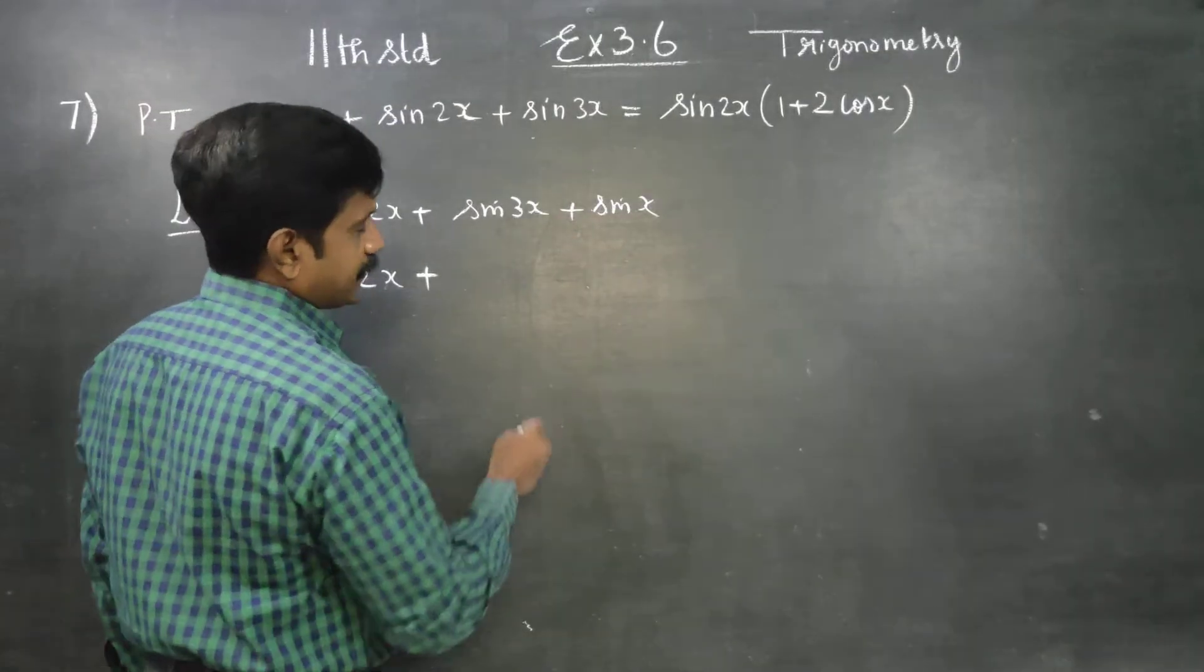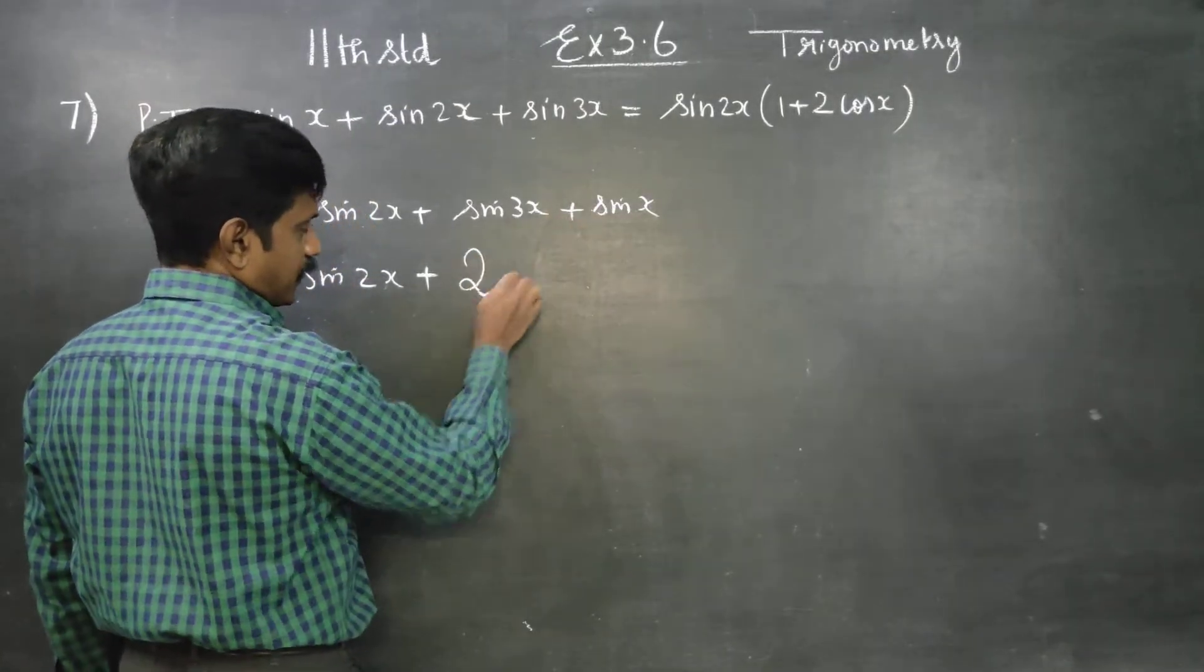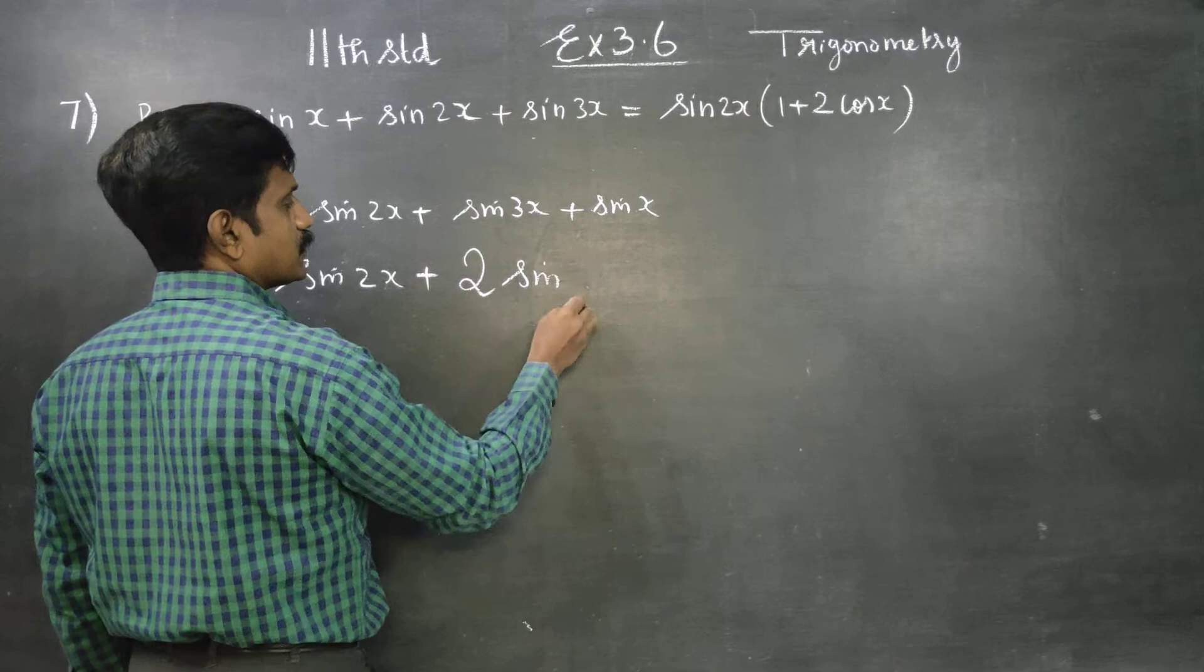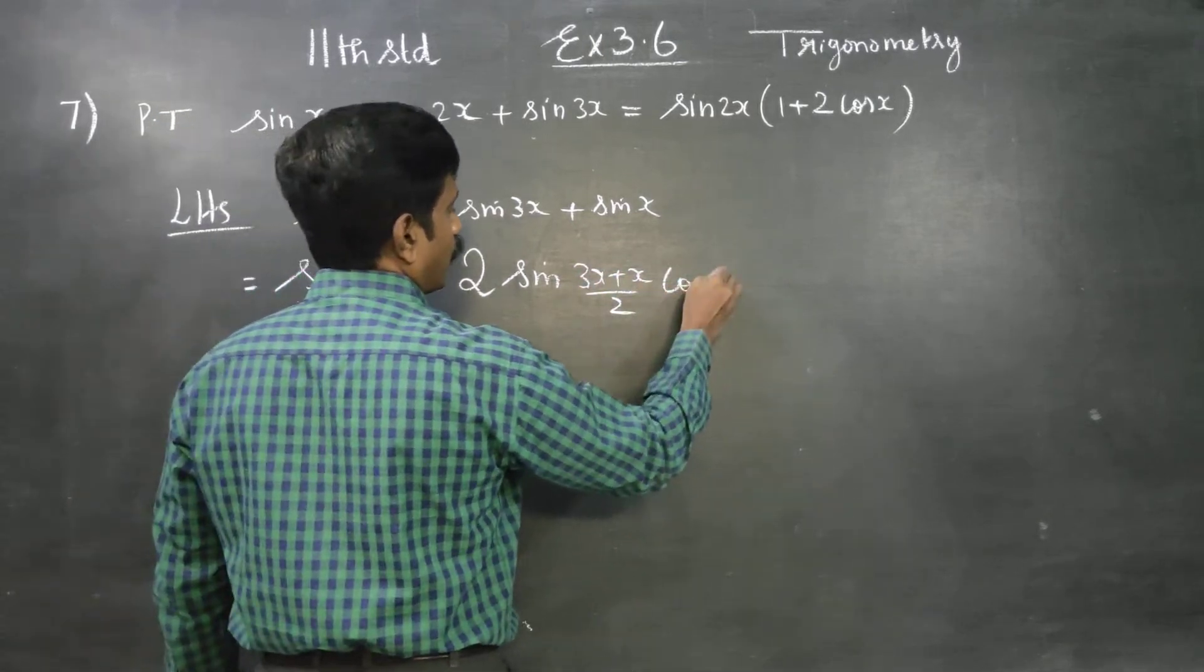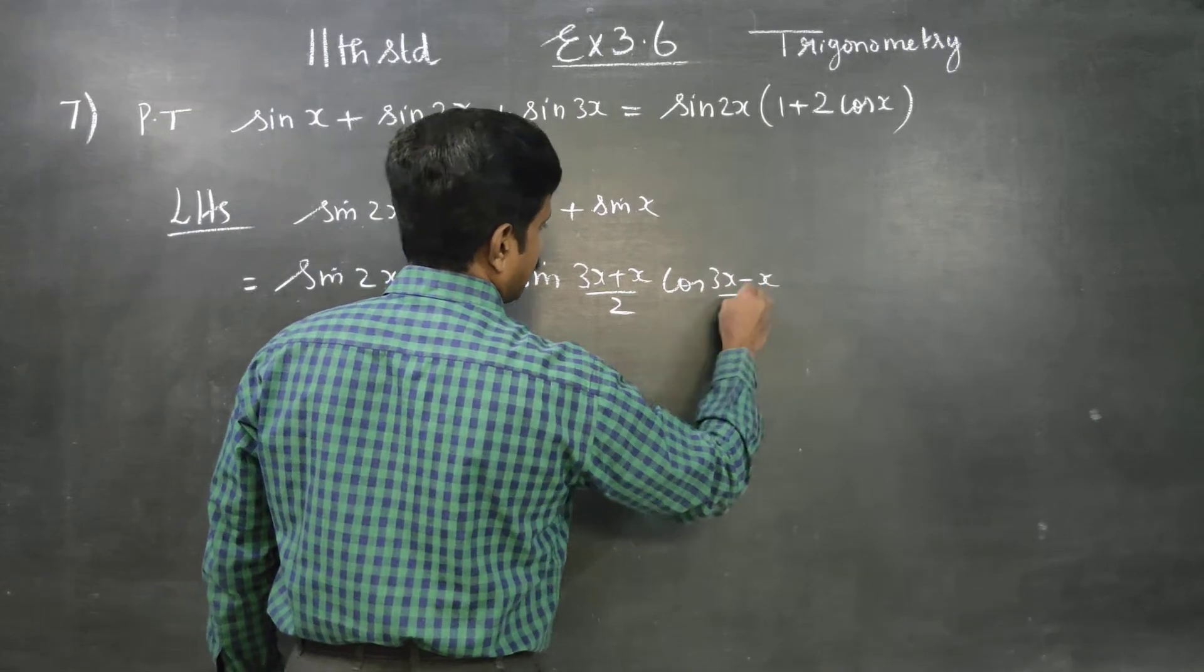What is sine c plus sine d? When you add sines, it becomes 2 times sine c plus d by 2, cos c minus d by 2.